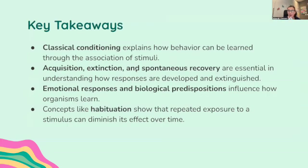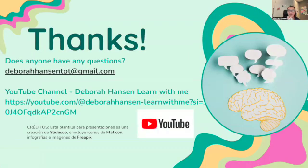The key takeaways for this section of unit three: Classical conditioning explains how behavior can be learned through the association of stimuli. Acquisition, extinction, and spontaneous recovery are essential in understanding how responses are developed and extinguished. Emotional responses and biological predispositions influence how organisms learn. And concepts like habituation show that repeated exposure to a stimulus can diminish its effect over time. That's pretty much what you need to know for classical conditioning for this section of unit three. Make sure you take really good notes and focus on those key terms so you can apply them to any FRQ or MCQ on test day.